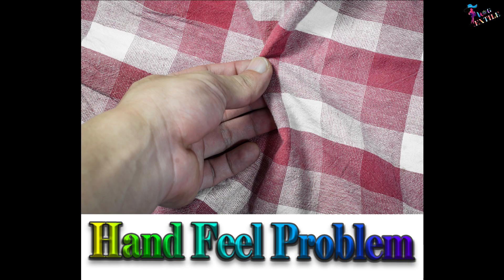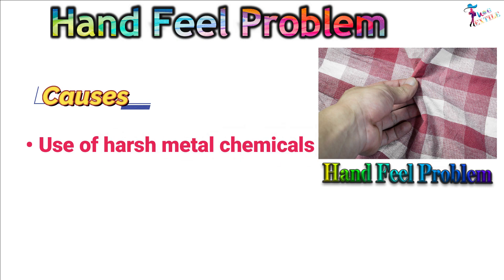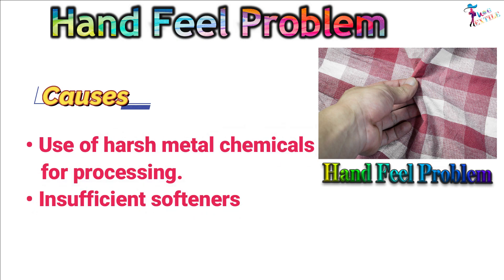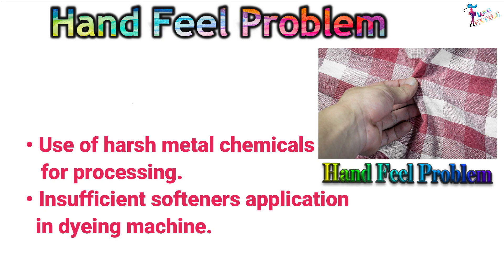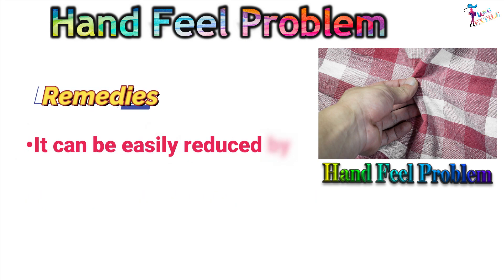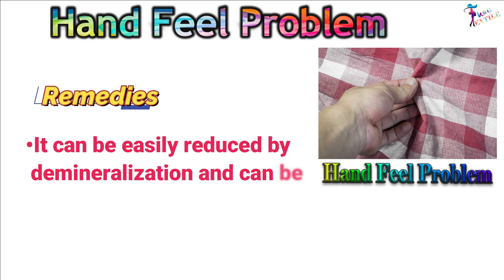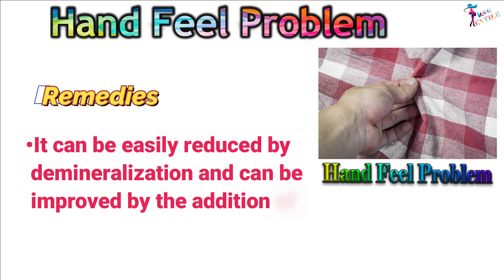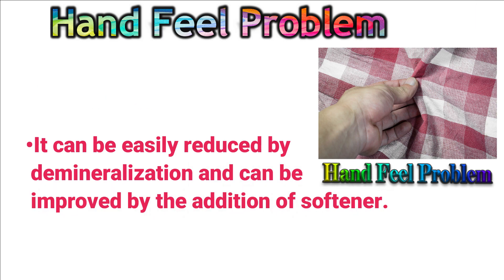Hand Fill Problem. Causes: Use of harsh metal chemicals for processing, and insufficient softener application in dyeing machine. Remedies: It can be easily reduced by demineralization and can be improved by the addition of softener.